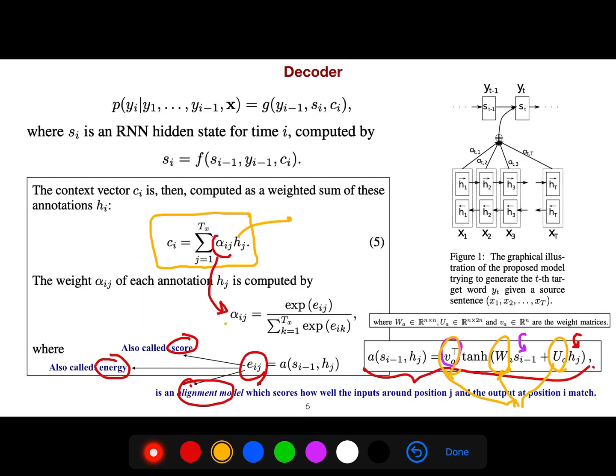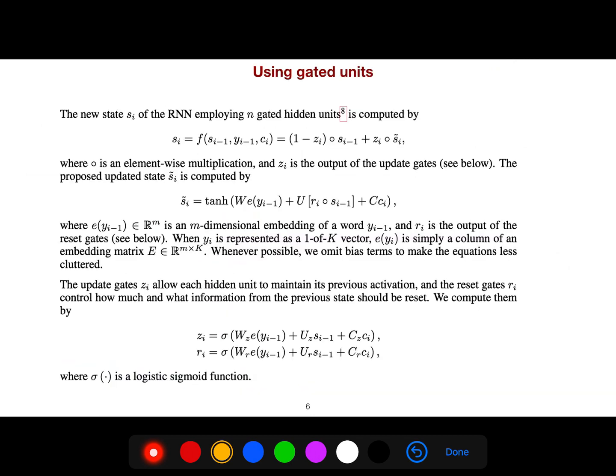But what is important is this alpha that just says what combination of your hidden states. For example, 20%, 30%, 50%, which combination should be represented, which combination of your hidden states can lead to a good context that can be used for a decoder.